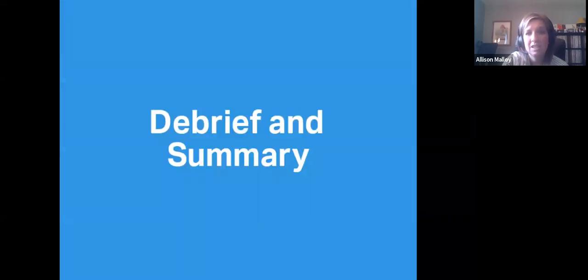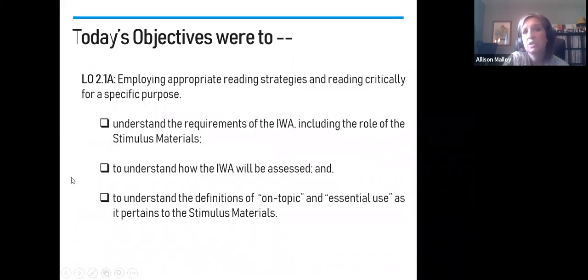Let's go back to everything we've covered today because we did a lot in just a little bit of time. Our objectives were to make sure that we understood the requirements of the IWA, including the role of the stimulus material, to make sure that we understood how we'd be assessed and to make sure we understood the definition of off-topic and essential use. Keep in mind that the purpose of the stimulus material is to inspire a topic inspired by a connection among two sources. And then you have to use one in an essential way. Think about that party analogy. If your source were just to leave, it would be eliminated from your paper. Would it matter? Would anybody notice? And if the answer is no, nobody would notice. It doesn't matter. It's not essential use. We want to make sure that we are very clear about the importance. We also want to make sure that if we're on topic, we are inspired by two, not just one, but two, and that we can use the stimulus to help back that up.